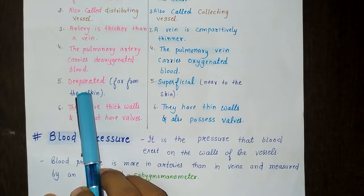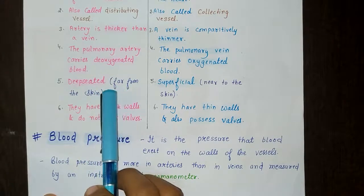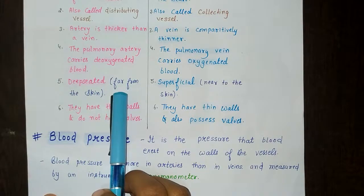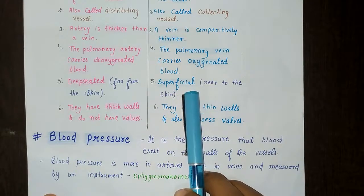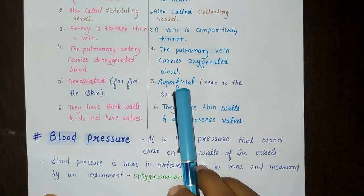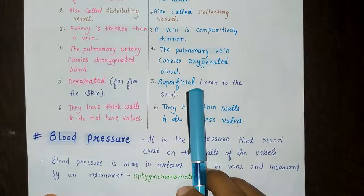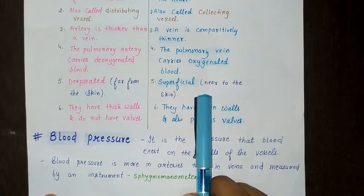Arteries are deep-seated, far from the skin, which is why we cannot see them. Veins, on the other hand, can easily be seen on our hands and shoulders because they are superficial — meaning near to the skin.